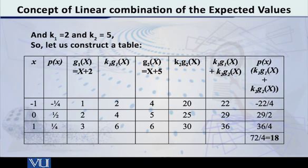Now let us consider the other one, that is g2(x) and k2 multiplied by g2(x). So what is g2(x)? It is equal to x plus 5. So minus 1 plus 5 is equal to 4, 0 plus 5 is equal to 5 and 1 plus 5 is equal to 6.